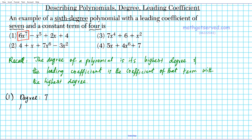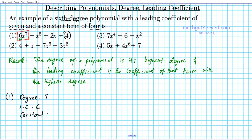The leading coefficient is the coefficient of the term with degree seven, which is six. So the leading coefficient is six. The constant term is the number with no variable attached to it, and that's four. So for option one: degree is seven, leading coefficient is six, and constant term is four.